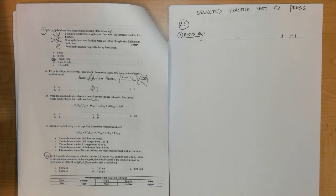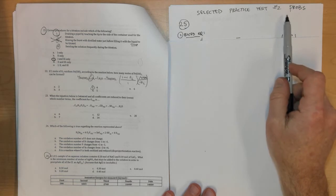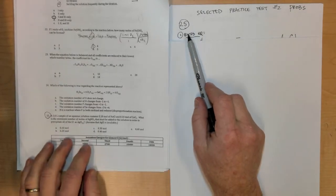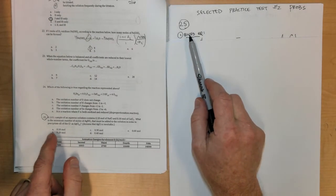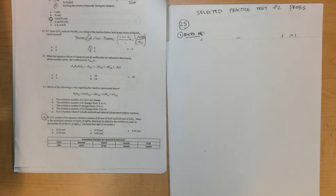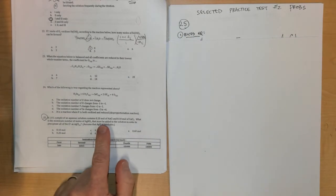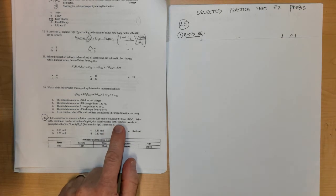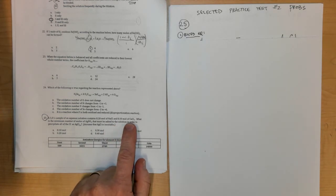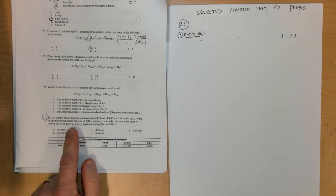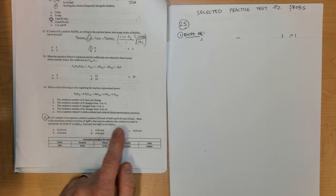This is a continuation of some selected practice test number two problems. Let's start with number 25, which asks: a 0.1 liter sample of an aqueous solution contains 0.1 moles of NaCl and 0.10 moles of CaCl2. What is the minimum number of moles of AgNO3 that must be added to the solution in order to precipitate all Cl- as AgCl?